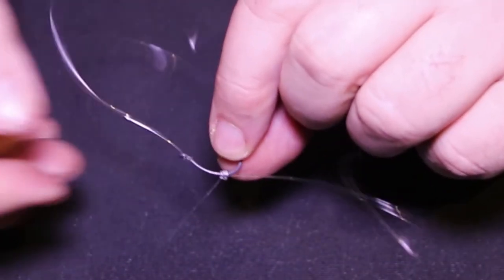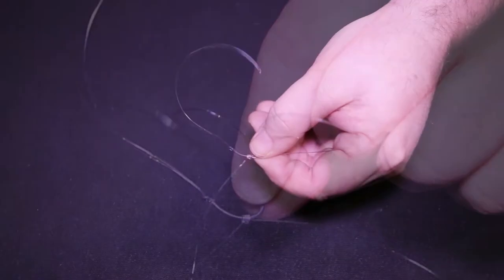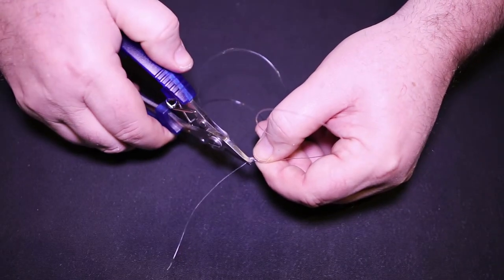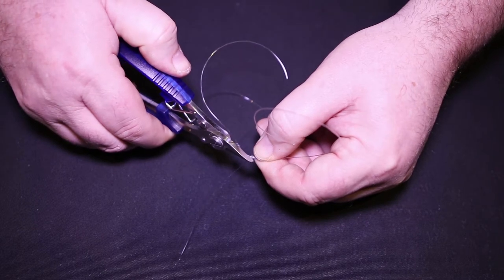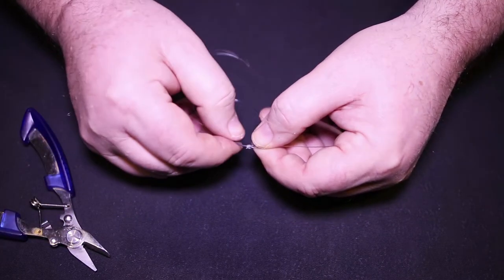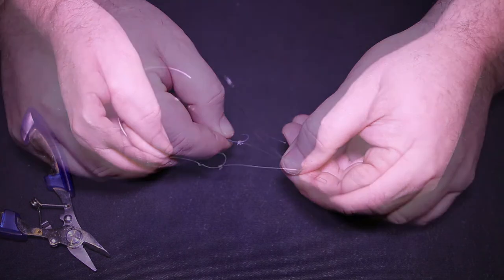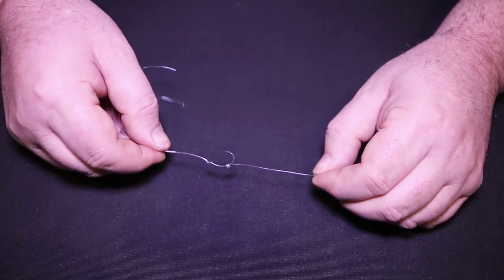Once you've pulled that tight, snip off the tag end. I don't think there's any need to blob this particular one on the back of the formula, but again that's your choice.